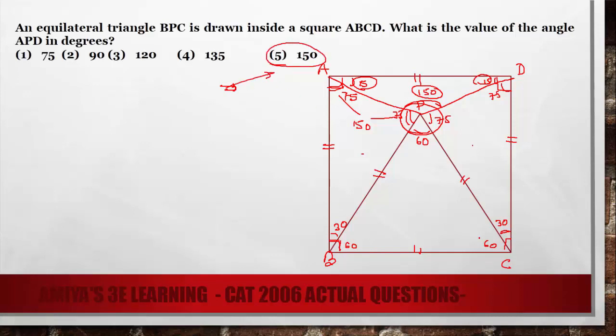And the learning is always plot the diagram, write all the data you know and start to solve the question from the maximum data you have. In this point, we have maximum data: line equal, line equal, line equal, 60 degrees, 30 degrees, 90 degrees. The same happens here and we solve the question.